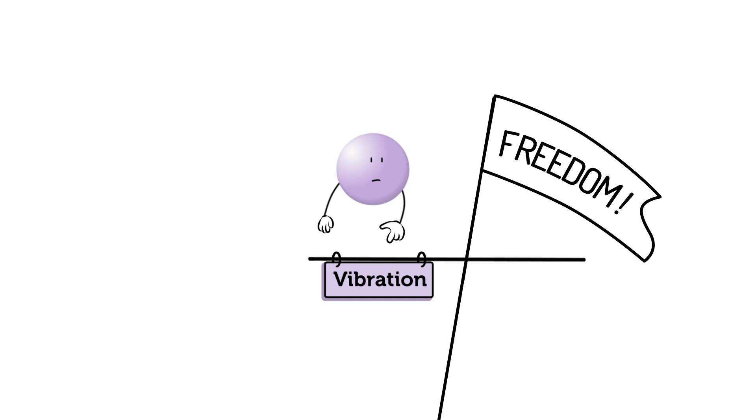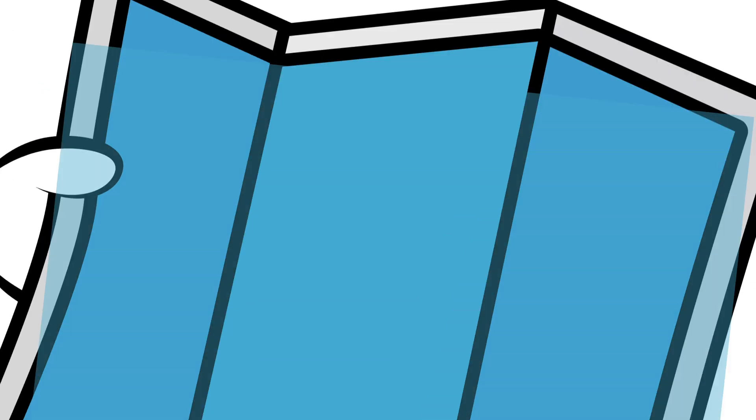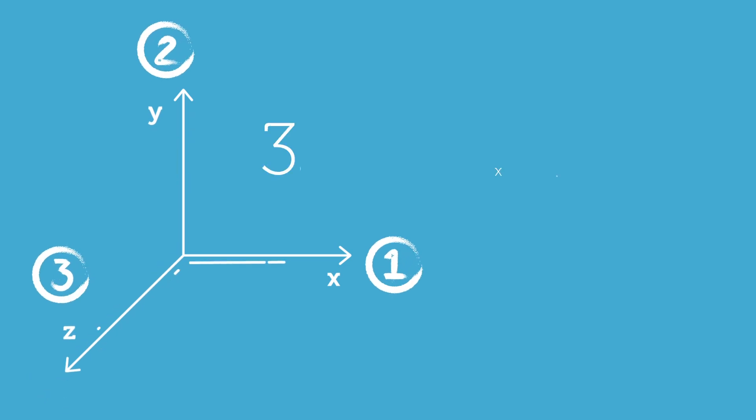If you know how many atoms a molecule has, you can count its vibrational modes. Start with the total degrees of freedom, which is three times the number of atoms in the molecule. That's because each atom can move in three different directions.